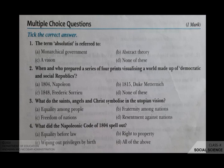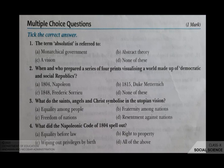The fourth question: what did the Napoleonic Code of 1804 spell out? Your options are A equality before law, B right to property, C wiping out privileges by birth, D all of the above. The answer is D, all of the above. The Napoleonic Code of 1804 spelled out equality before law, right to property, and wiping out privileges by birth, so all these answers are correct.